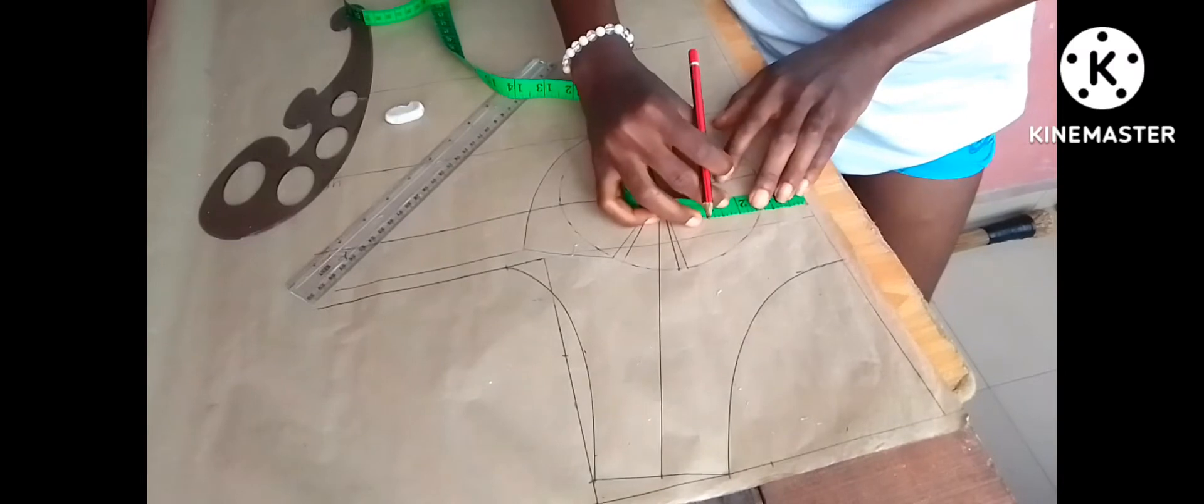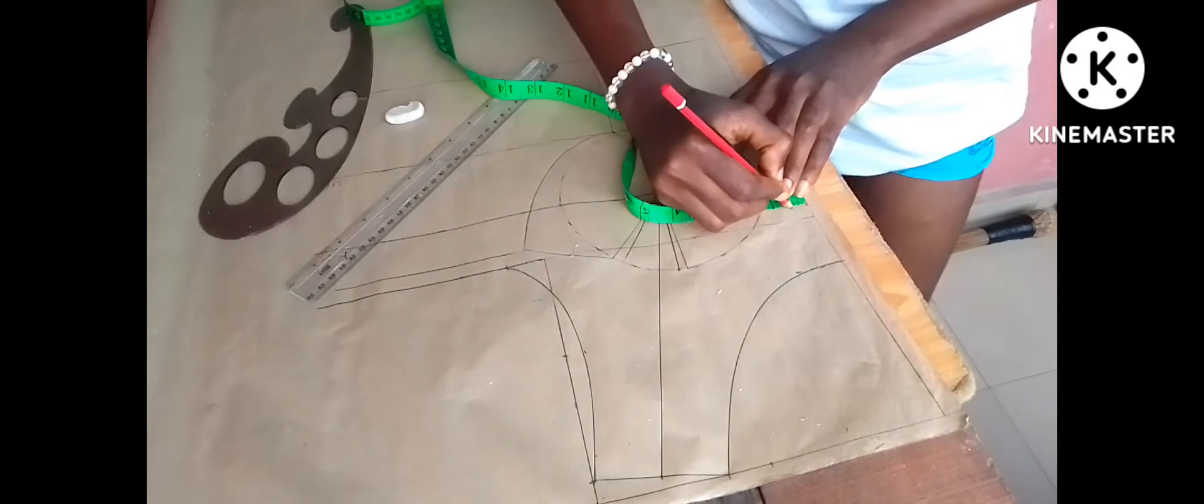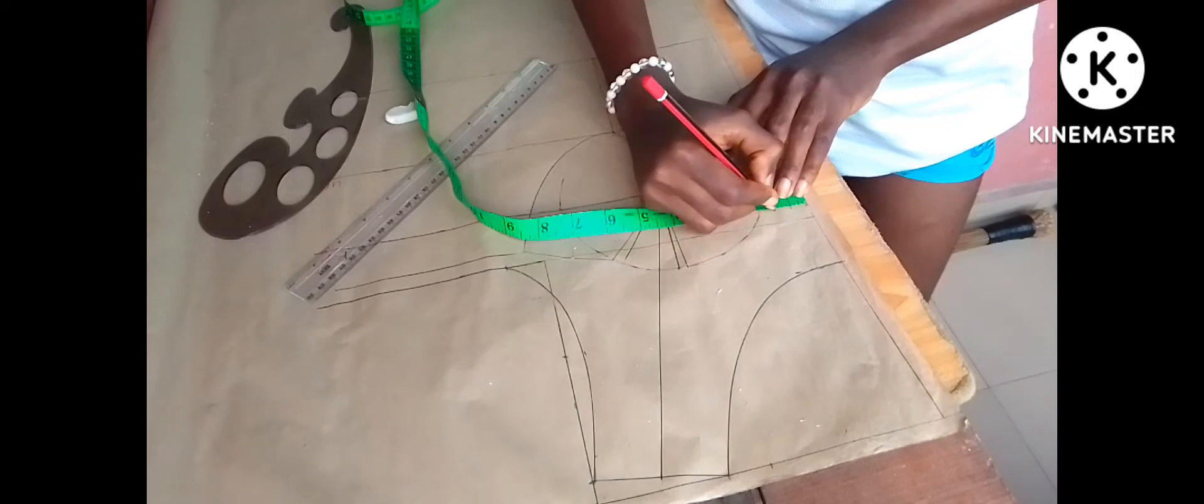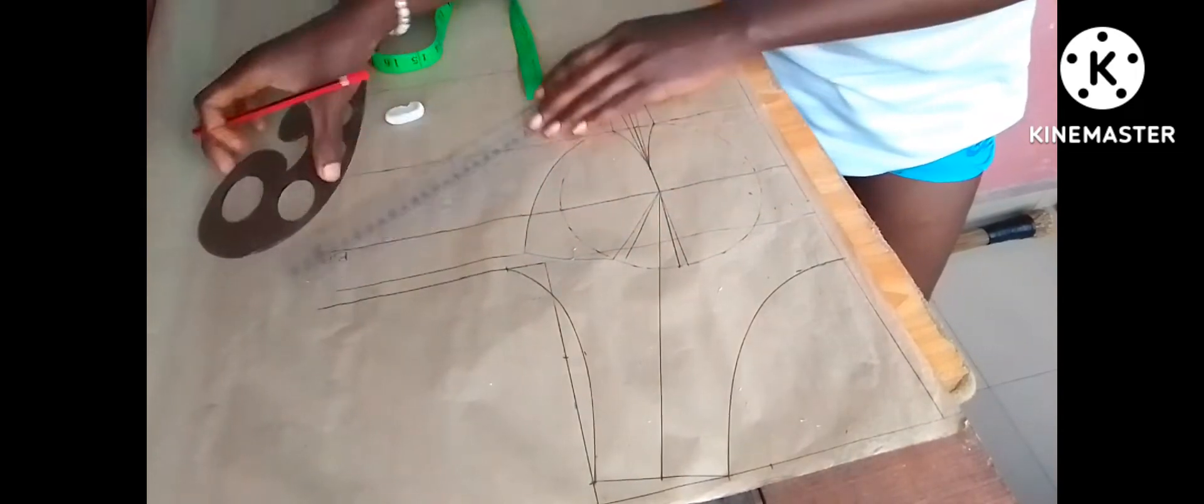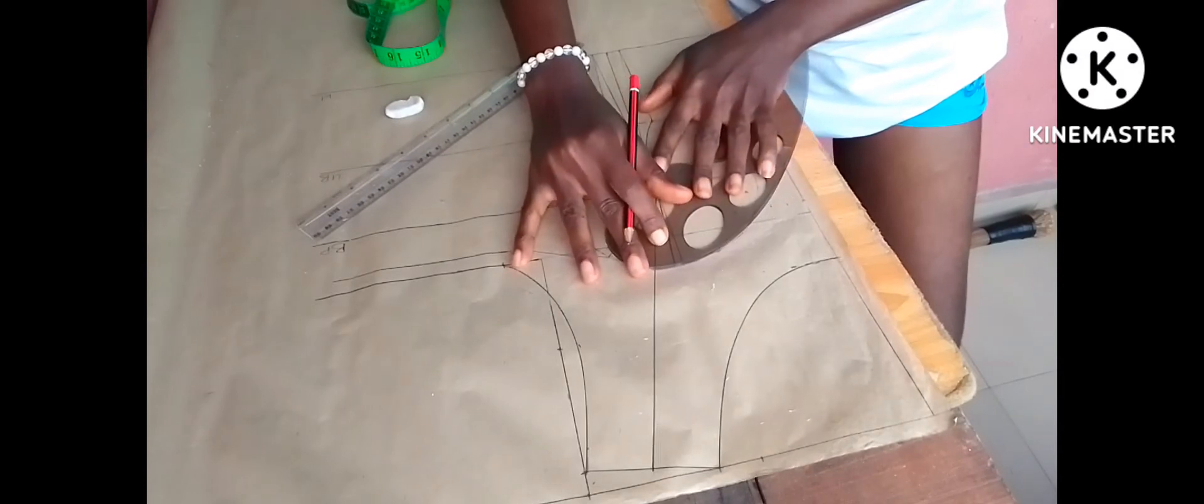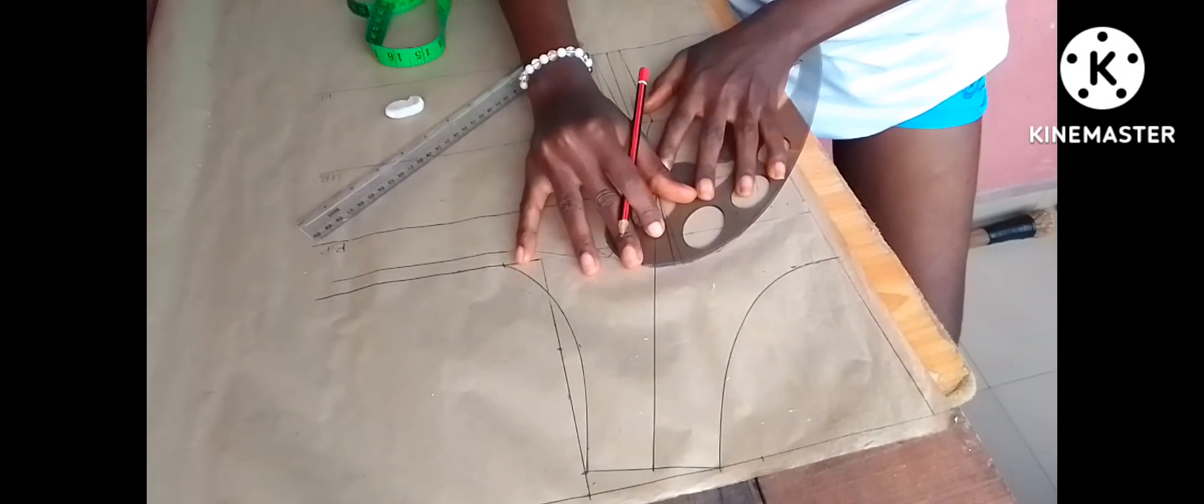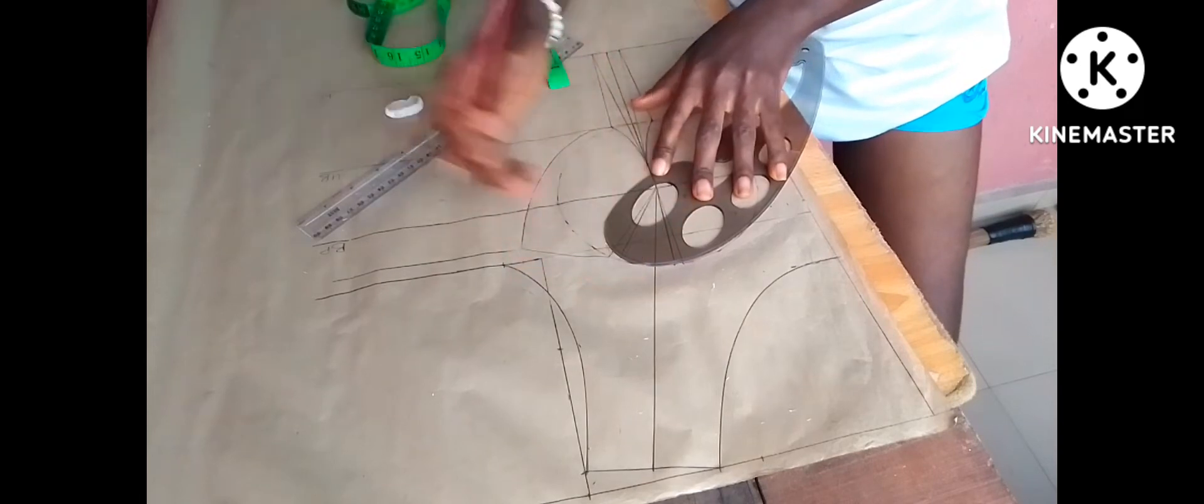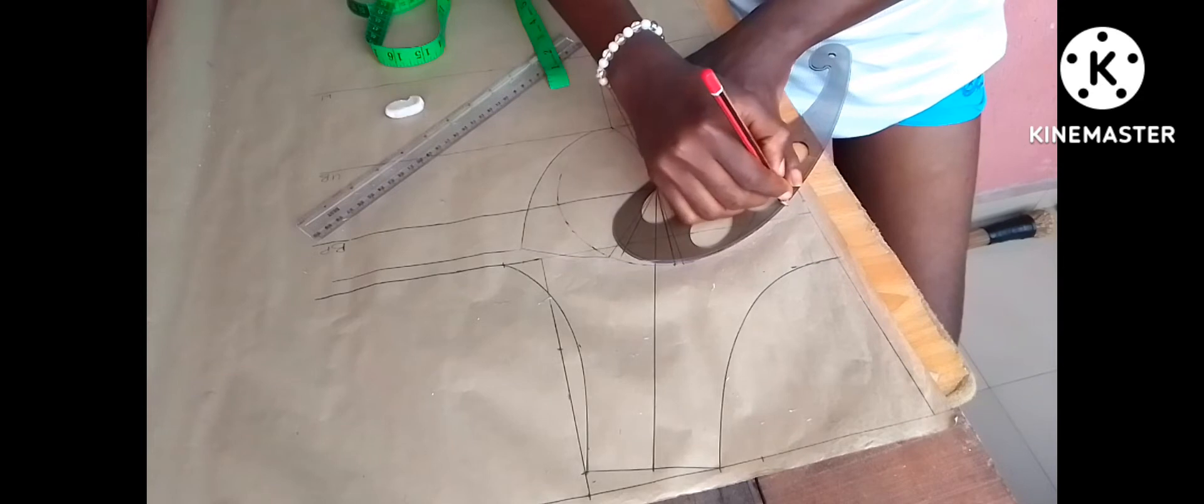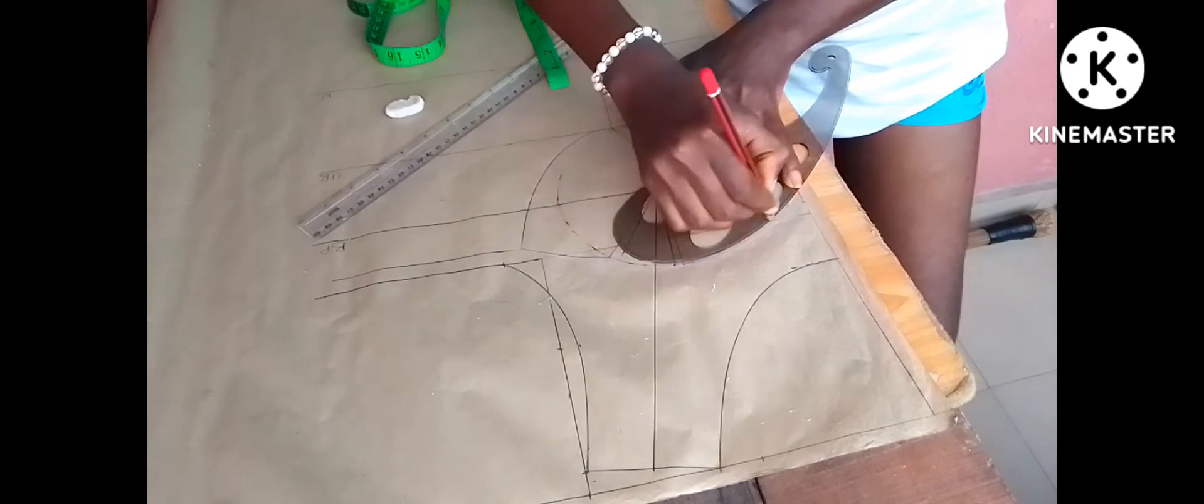Now from your chest line come down by either one or half inch. It is totally your choice. Now from that point come in also by one or half inch. For me I came in by half inch. Then from that point you connect it with a curve up to the dart that you made on top of that circle. Watch what I'm doing.